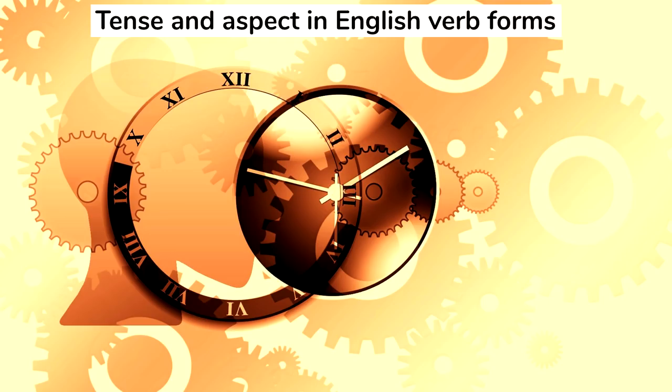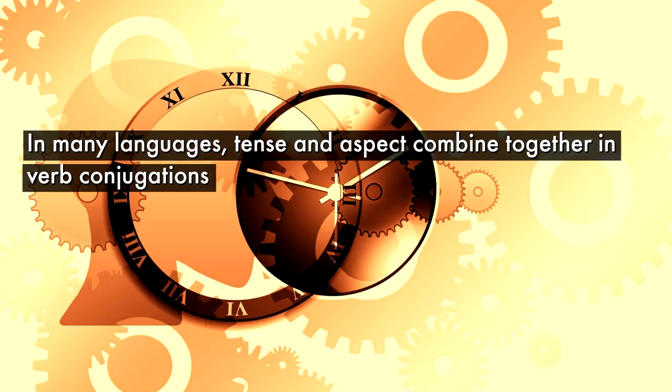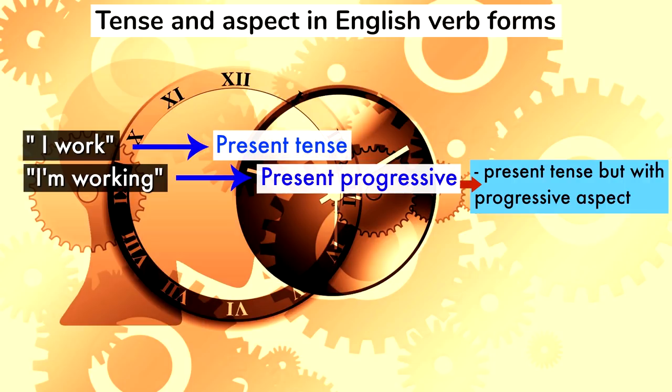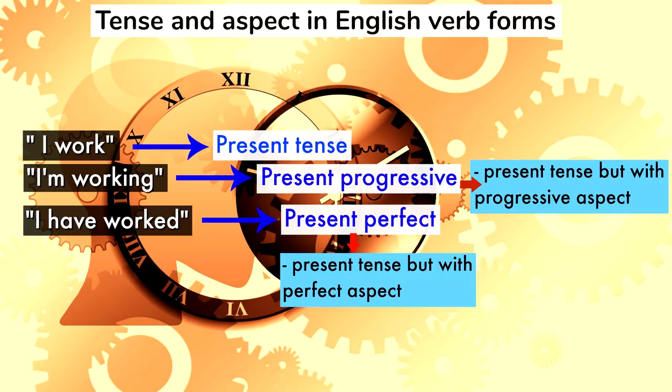For example, in English we have the present tense, as in I work, and we have another form, I'm working, which is in the present tense, but with progressive aspect. And we have I have worked, which is in the present tense, but with perfect aspect, showing a connection between a past event and the present. People tend to think of all of these different verb constructions as tenses, but strictly speaking there is more than just tense there.